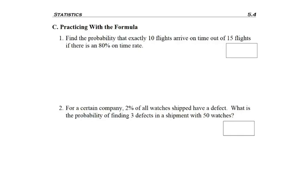Now we're actually going to use the formula on a problem. We've seen this first problem before: find the probability that exactly 10 flights arrive on time out of 15 flights if there's an 80% on-time rate. I'd already found the four parts that I'm going to need for the formula, but I always like to do it each time I solve a problem.